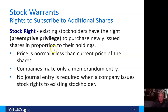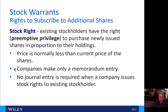Stock warrants — rights to subscribe to additional shares. A stock right gives existing stockholders a preemptive privilege to purchase newly issued shares in proportion to their holdings, so they don't suffer dilution. The price is normally less than the current price of the shares, and companies make only a memorandum entry — no journal entry is required when the company issues stock rights to existing stockholders.